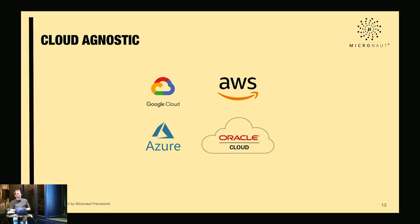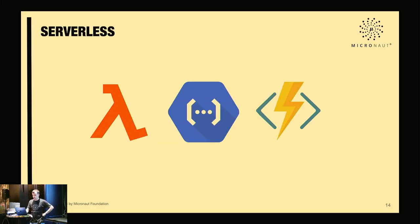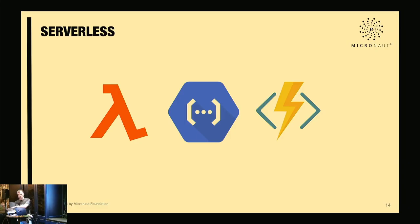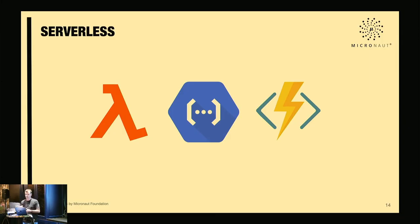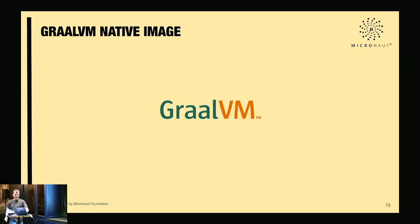Micronaut supports the four major cloud vendors: AWS, Google Cloud, Azure, and Oracle Cloud. There's great integration with AWS Lambda, Google Cloud Run, and Azure Functions, plus support for Cosmos DB. On serverless, Lambda is supported both on the Java runtime and as a native executable on a custom runtime — so you can finally have a Java serverless application that starts fast, solving the cold-start problem.